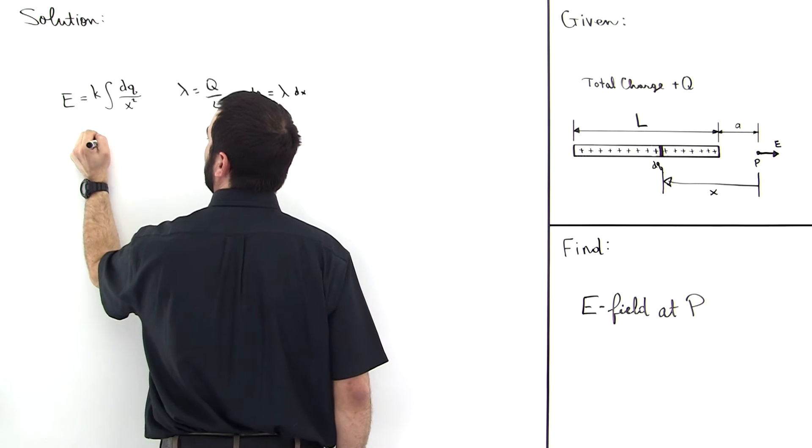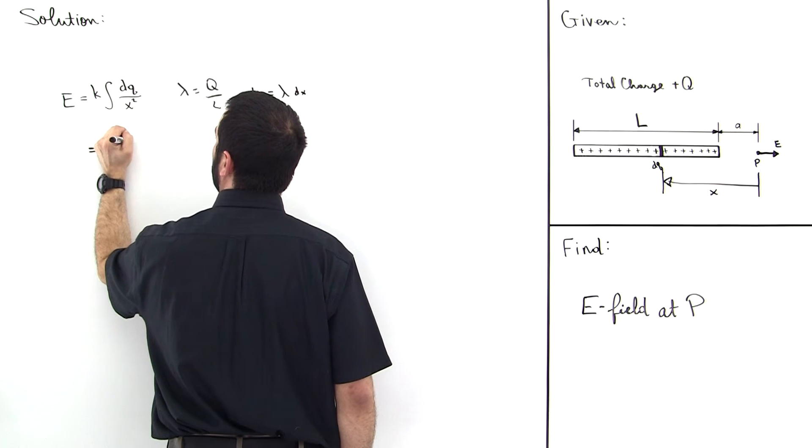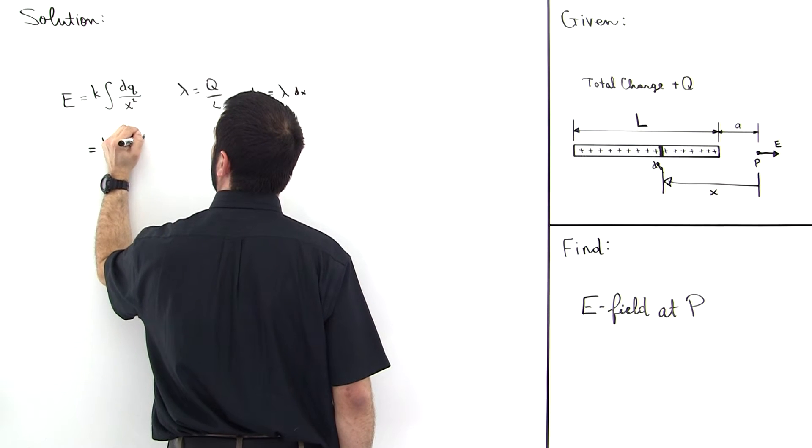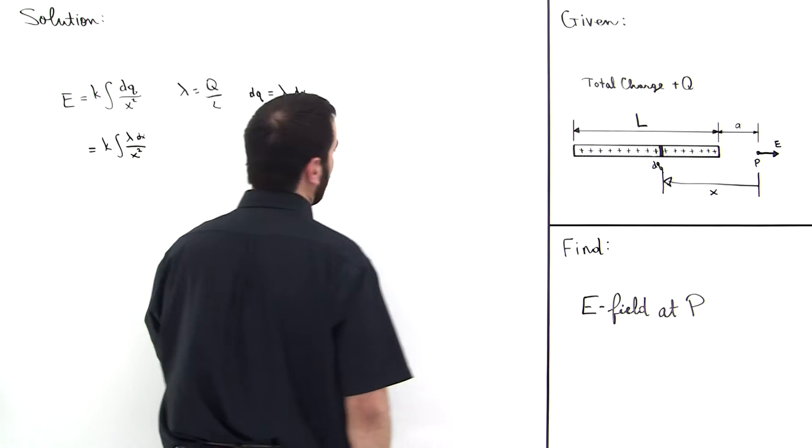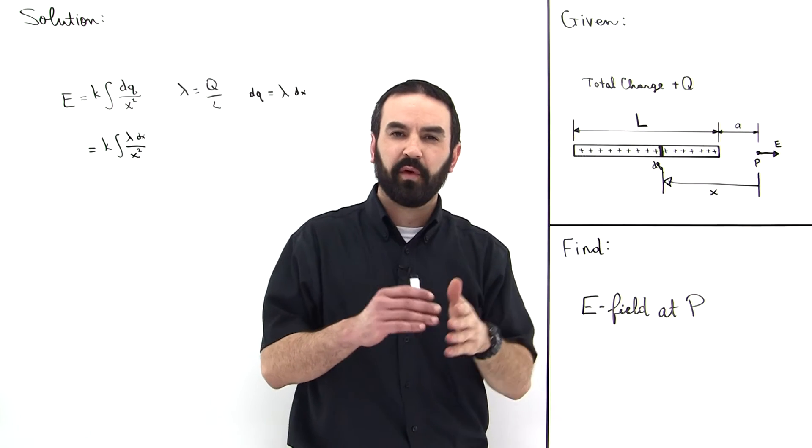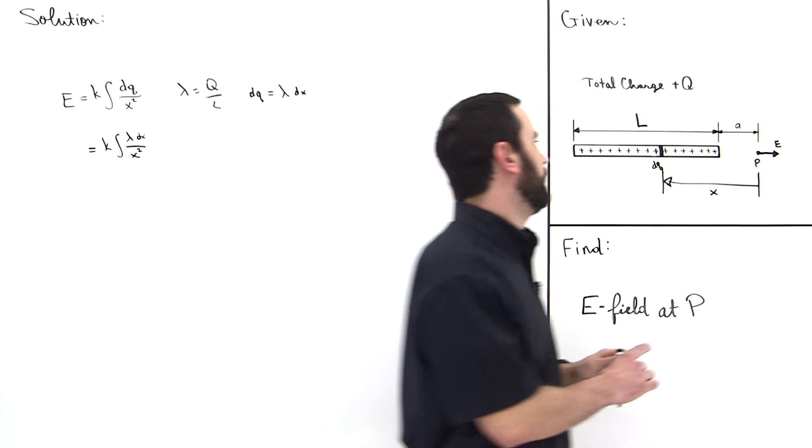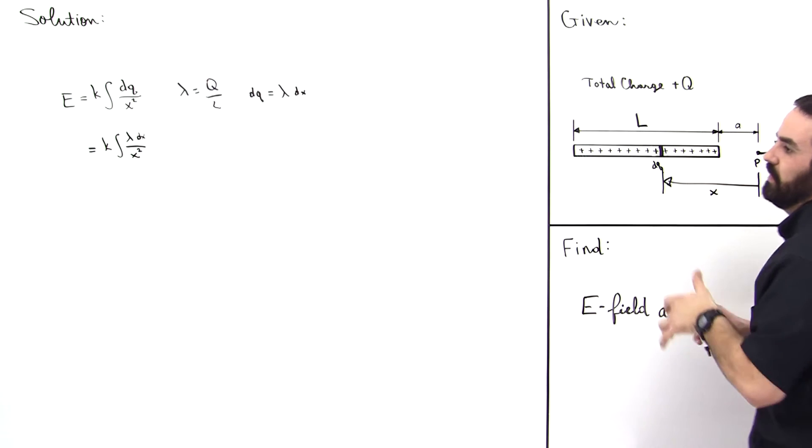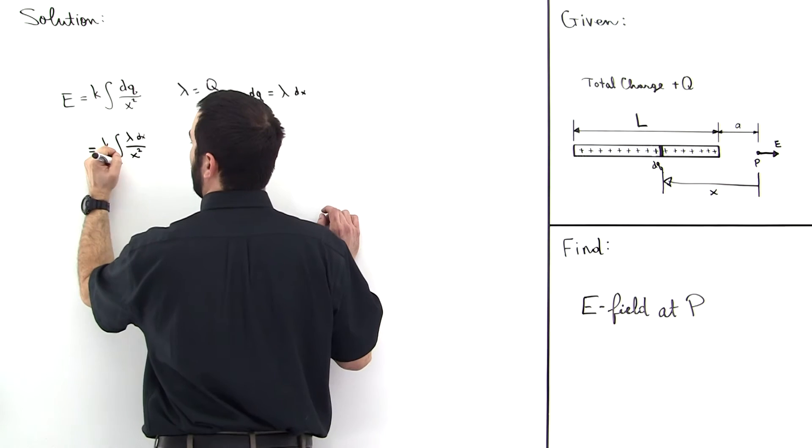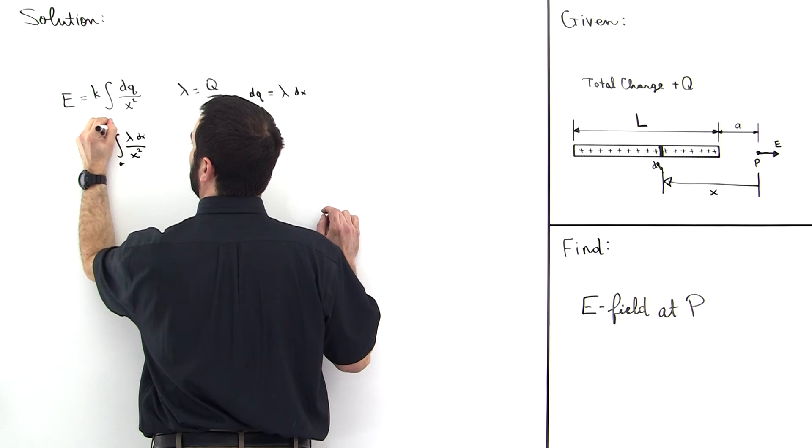What about the limits of integration? We integrate from the beginning point to the ending point. We're going to integrate from here all the way to here. The first point, the distance of this point from here is A. So we integrate from A to A plus L. So the limits of integration are A and then A plus L, like this.